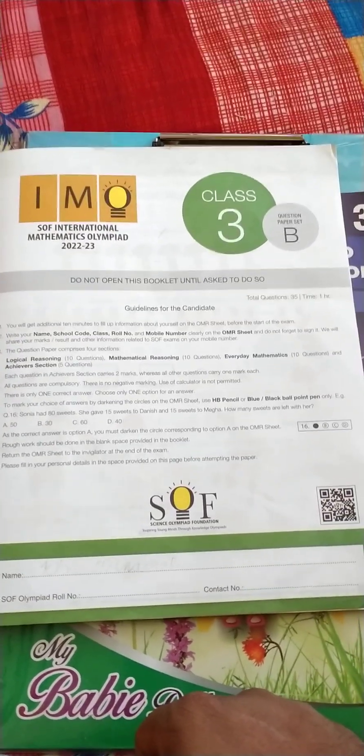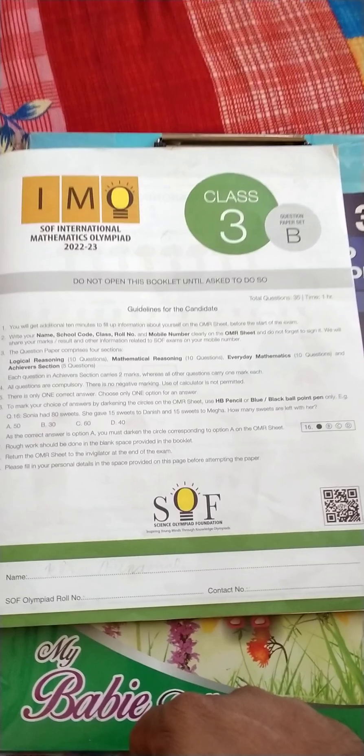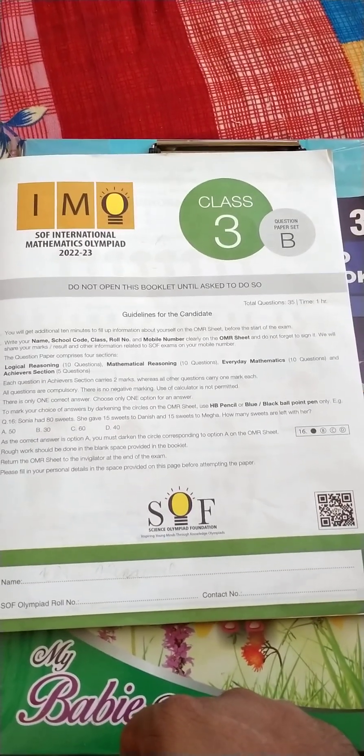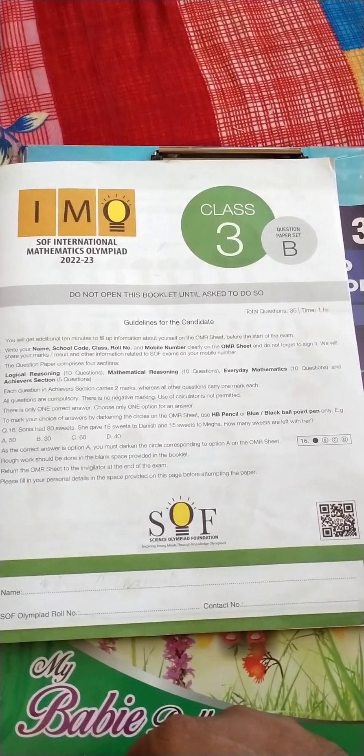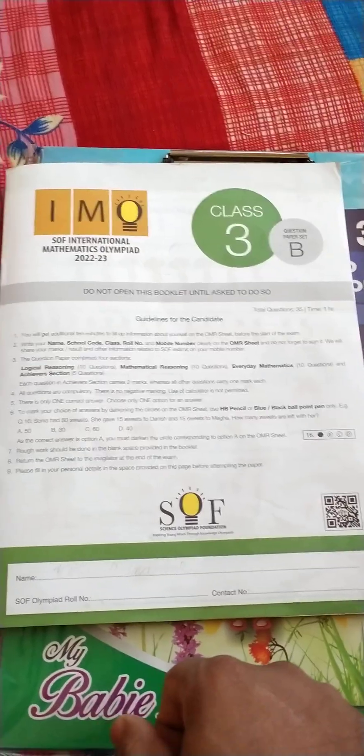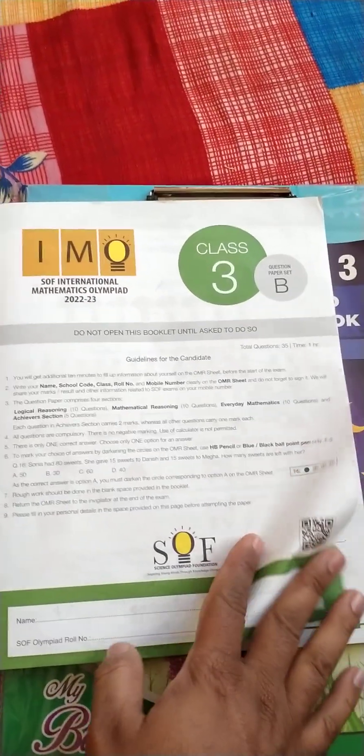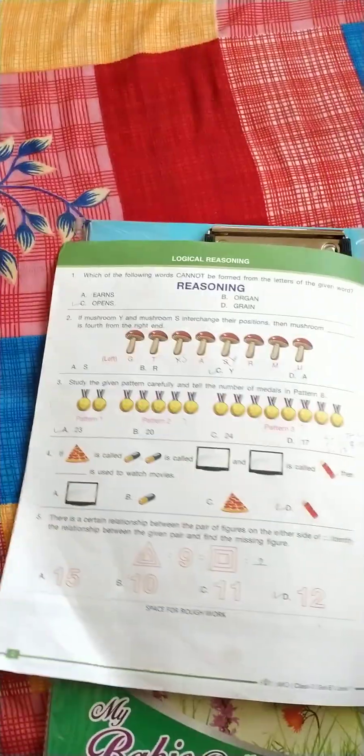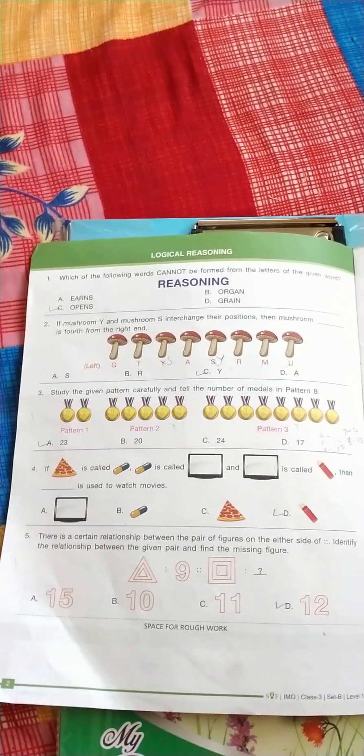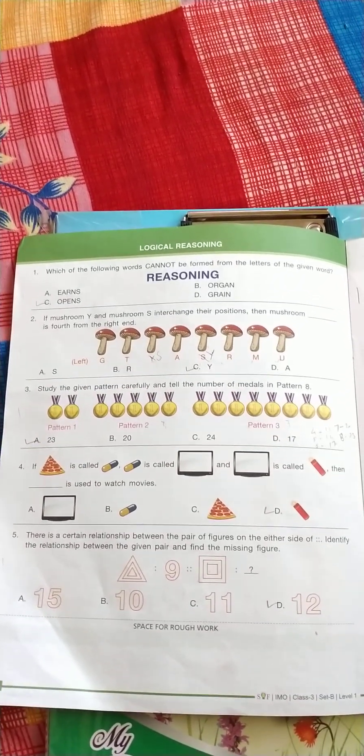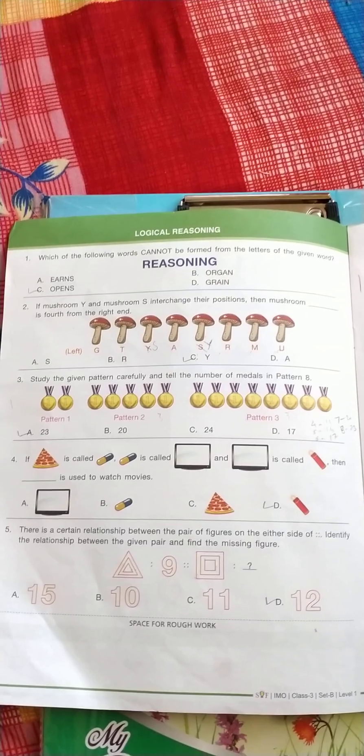Hello my dear friends, today we discuss the IMO paper class 3 set B. It is a 22nd November paper. So let's start question number one which of the following word cannot be formed from the letters of the given word reasoning.